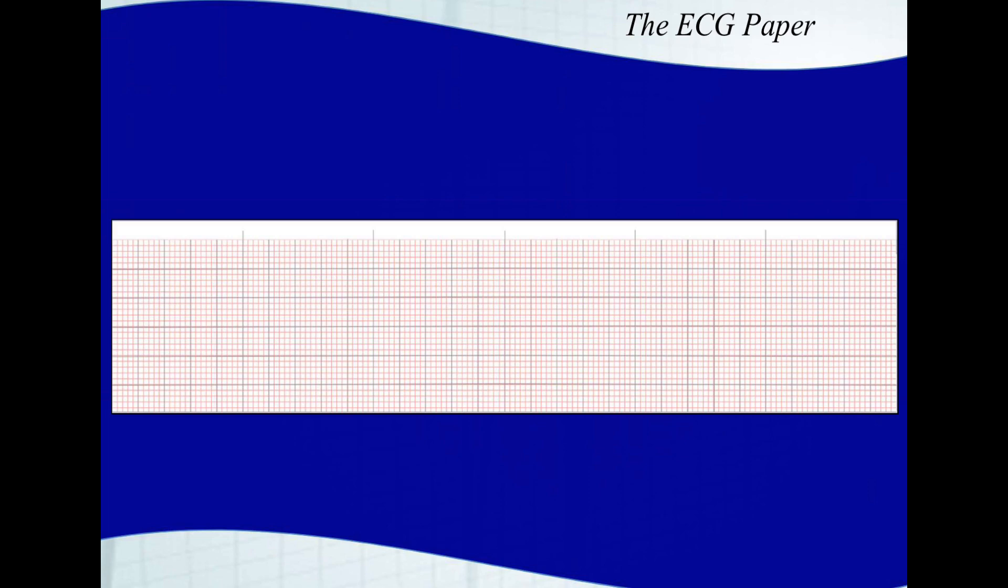With that said, let's talk about the EKG paper, and it's always going to be a very similar-looking graph. I like to use six-second strips. What you'll notice is a grid made of bold lines and lighter lines, and they create large and small boxes.